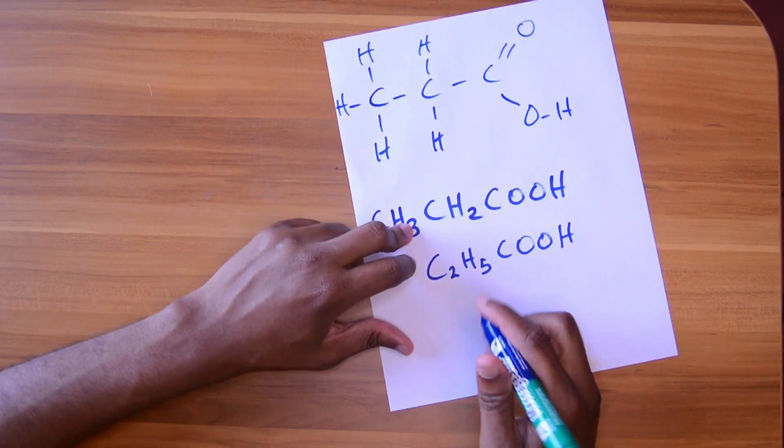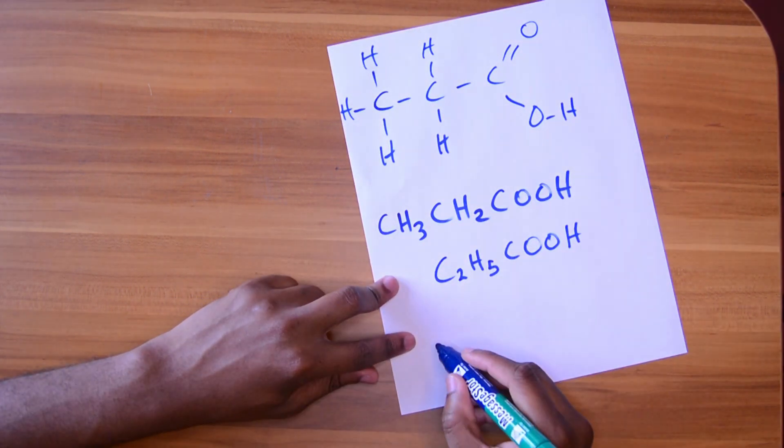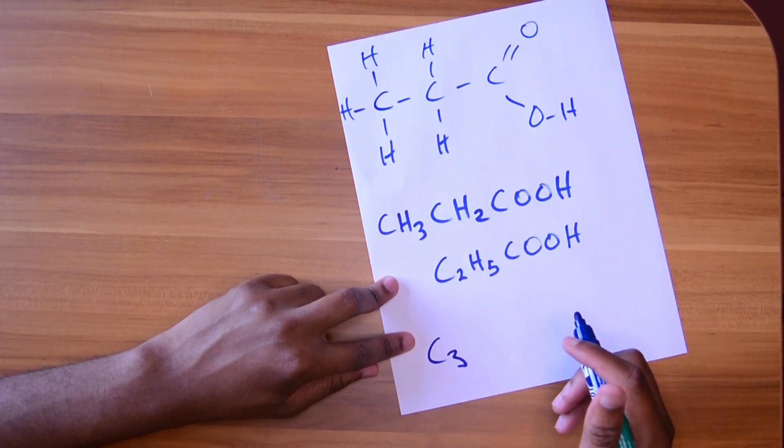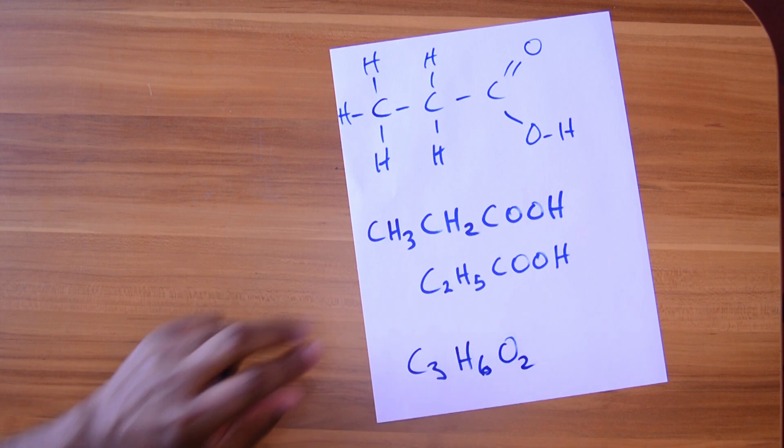And then we can just have the molecular formula which will just tell us the number of carbons we have. So you just count it up. One, two, three. Six hydrogen and two O's, two oxygens.